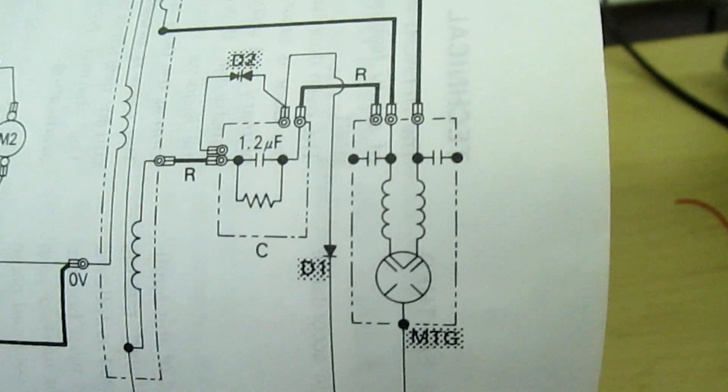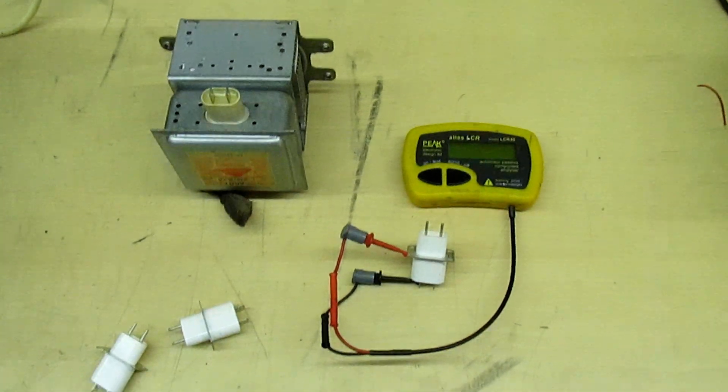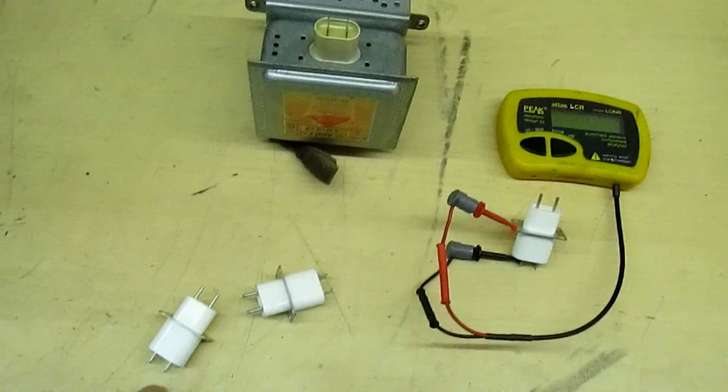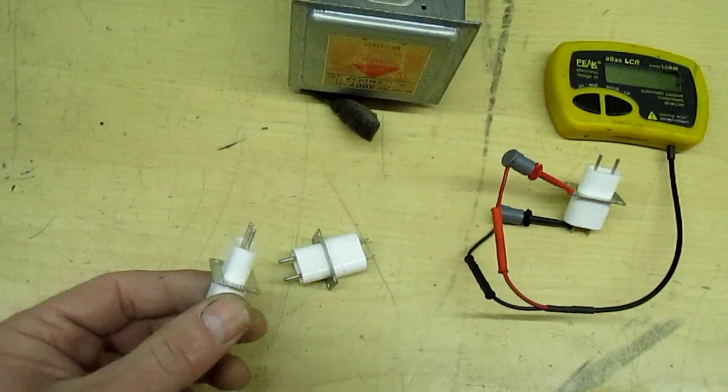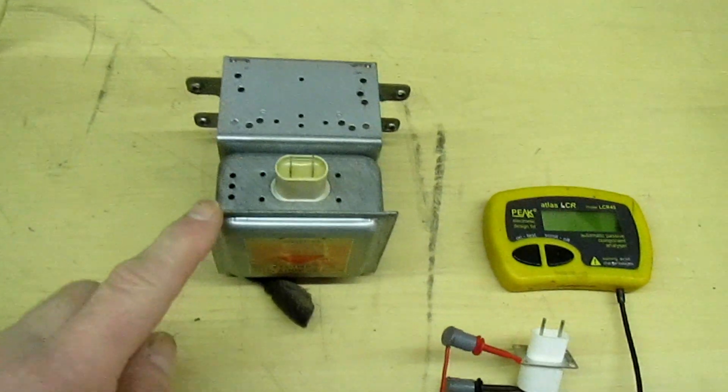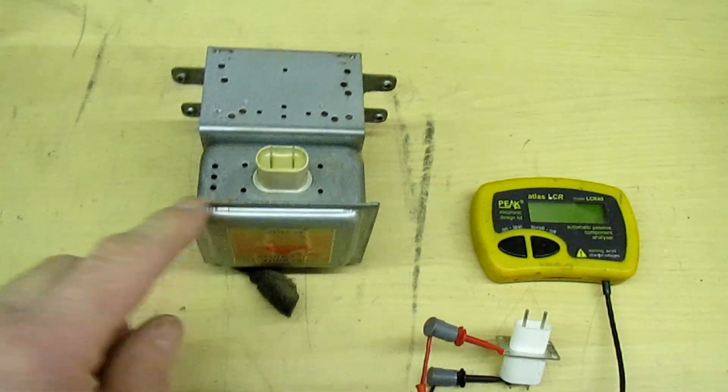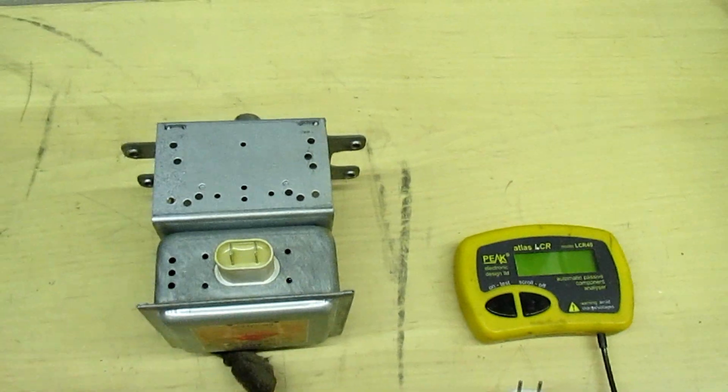Right, so what a lot of people don't realize is the filament terminal with the two built-in feed-through capacitors - you can actually buy these on their own. Now it takes a little bit to fit because you've got to get the top off the magnetron. Because these are riveted in, you're going to have to put four nuts and bolts in these holes and solder the wire on. But this feed-through capacitor is actually a replaceable part.